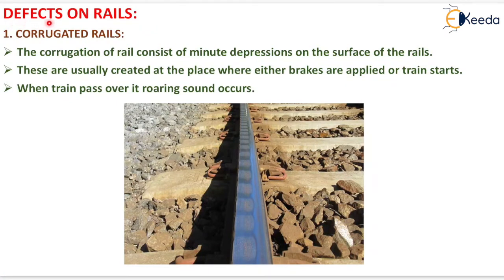Defects on rails — the first one is corrugated rail. Corrugation consists of minute depressions on the surface of the rails, usually created at places where brakes are applied or the train starts. When a train passes over it, a roaring sound occurs.